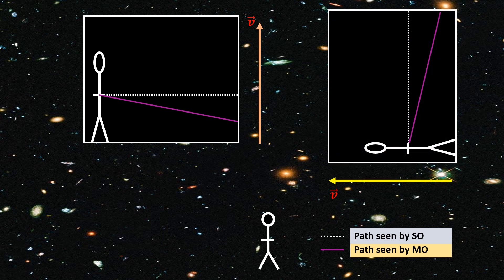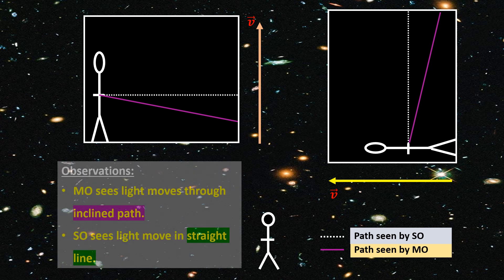Rotating this frame 90 degrees yields this. So the equivalence principle leads us to conclude that an observer in a spaceship moving at a constant velocity will see a light trace an inclined path, while a stationary observer will see the same light go through in a straight line.